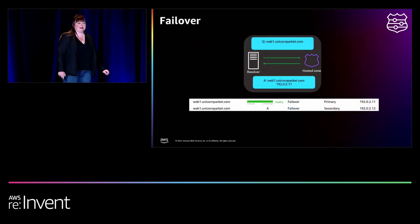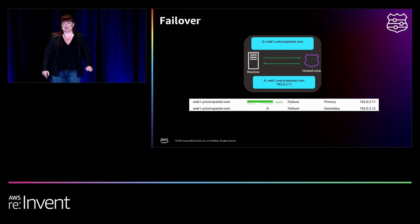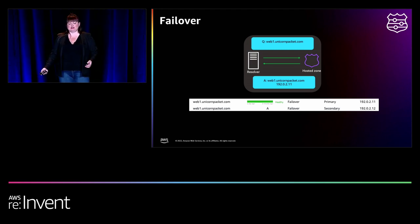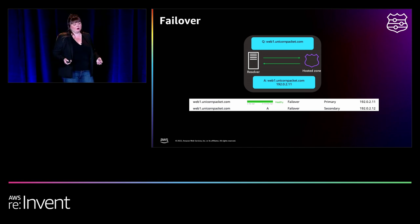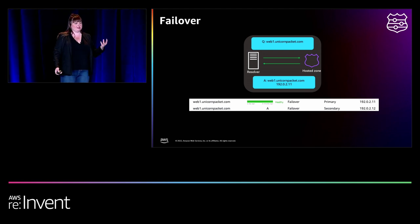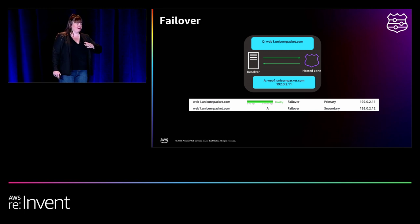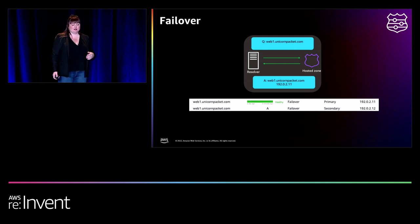And then lastly we have failover. This uses those health checks mentioned before. The health of the first — primary — resource is checked, and if that fails, you failover to the second resource. That's how it responds.